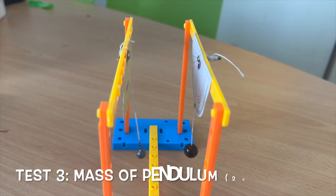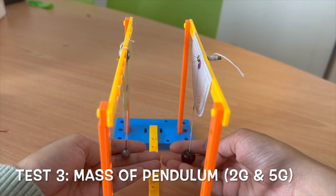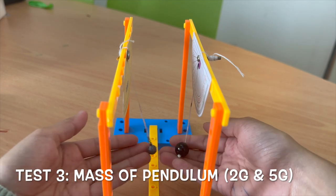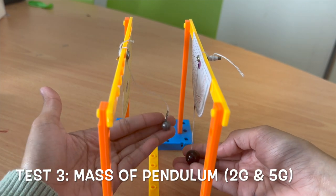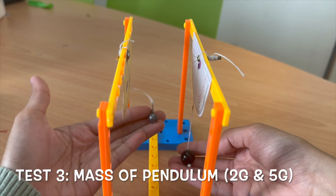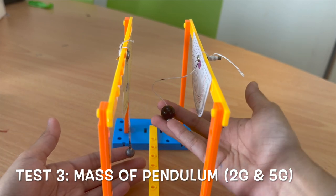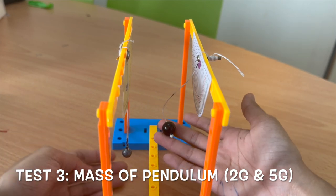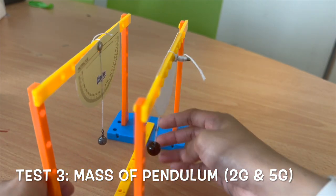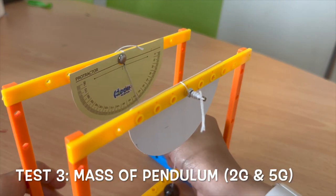For the third test, both are at 8cm. The only difference is the one in grey pendulum is 5 gram. The black big pendulum is 2 gram. So the length is the same. The angle should be the same too.